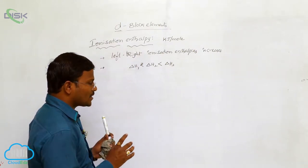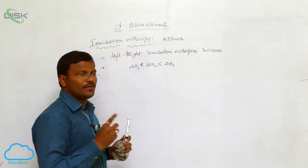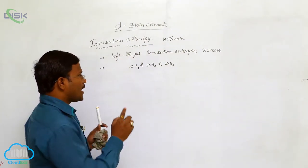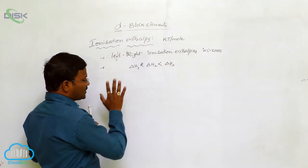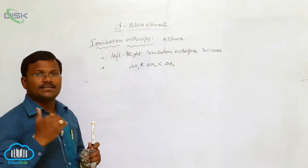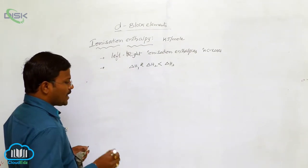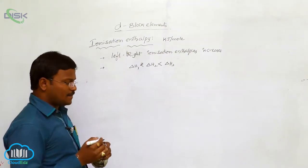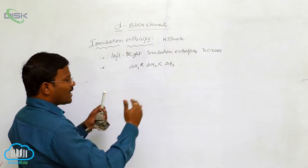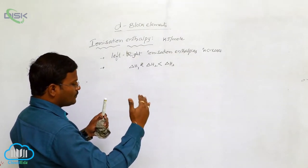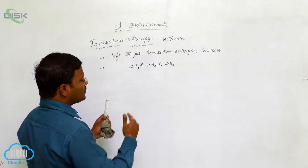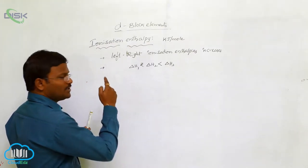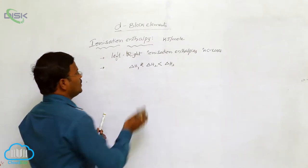In such cases, to eliminate electrons from such types of atoms, we have to use an additional amount of energy. The ionization enthalpy values may increase. This is generally how ionization enthalpies are represented, and graphical representation helps us explain slight variation between one element and another element belonging to the D-block category.